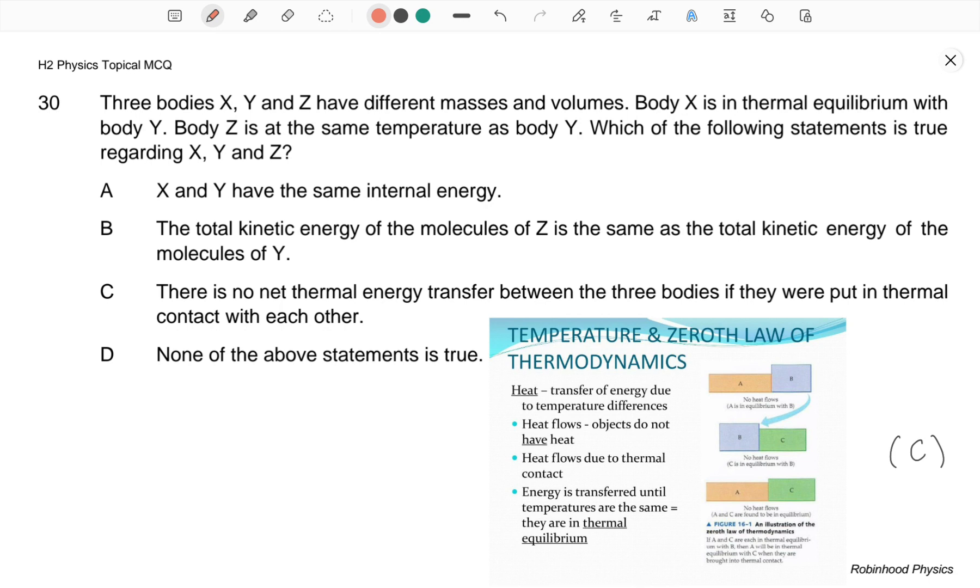So we know that the temperature indicates the average KE. And when objects are in thermal equilibrium, if there is a temperature difference, then it will tell us which direction thermal energy will flow.